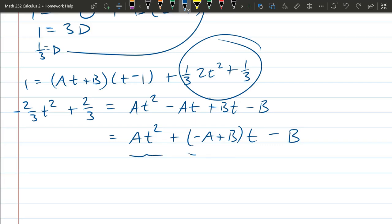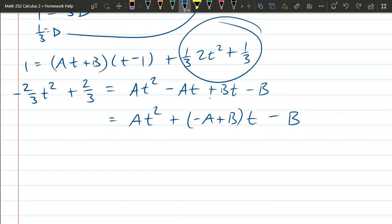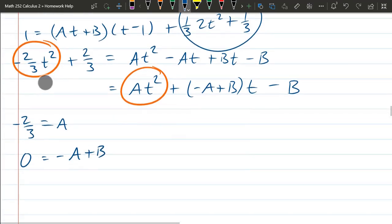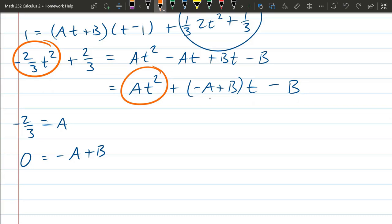Matching coefficients. Normally you would sort by powers of t. So you see the squared term, the first degree term, the first degree term, and the zero degree term. Now we're going to match coefficients. In front of t², negative 2 thirds has to equal a. These coefficients have to be equal because they're both in front of the square, t². Now, there is no t to the first power on the left, which means there's zero in front of t. And that equals negative a plus b. Last up, constant. 2 thirds is equal to negative b.